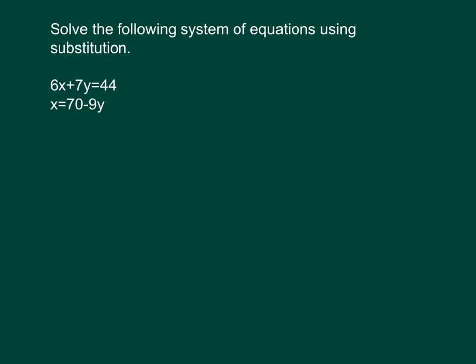And the reason this is called substitution is because when I take a look at this equation up here, you can see I have x is equal to 70 minus 9y. Both of these equations have two different letters in them, but I'm going to use this fact that I know x is equal to 70 minus 9y to help me get a single equation with one variable.